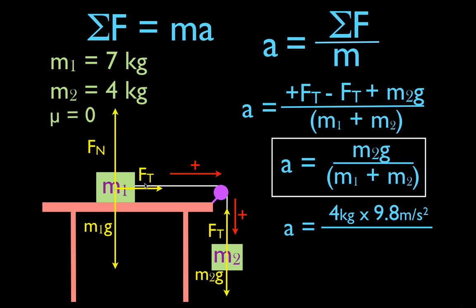Now we can plug the values in. m2g is 4 times 9.8 m/s². The sum of the masses is 11 kg, and that means the acceleration is 3.56 meters per second squared. That is the acceleration for both objects: summing the forces and dividing by the total mass gives 3.56 m/s².